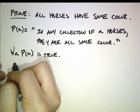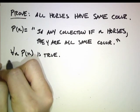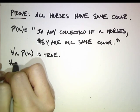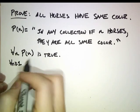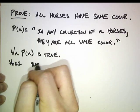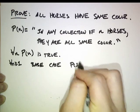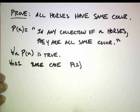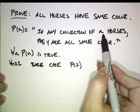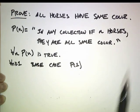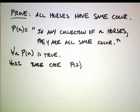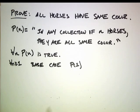What's the first step? The base case. We should say for all n greater than or equal to 1. So the base case is P(1). P(1) says: in any collection of one horse, they are all the same color. That's true — if you have just one horse, then every horse in that collection has the same color.